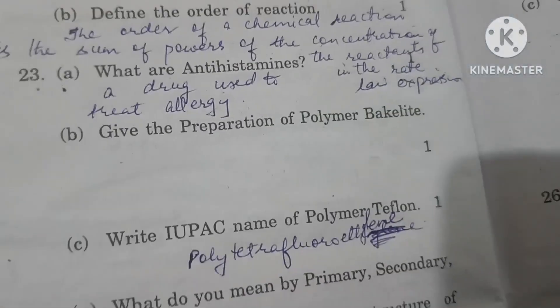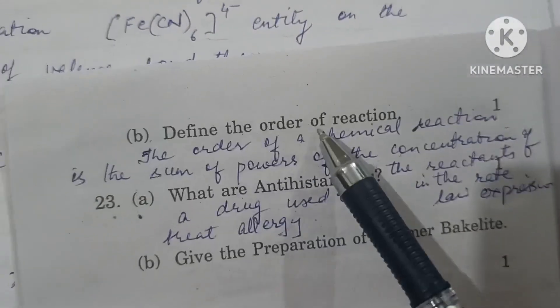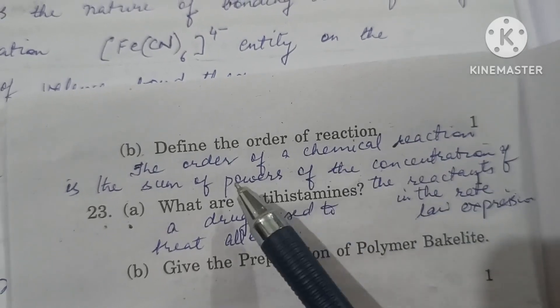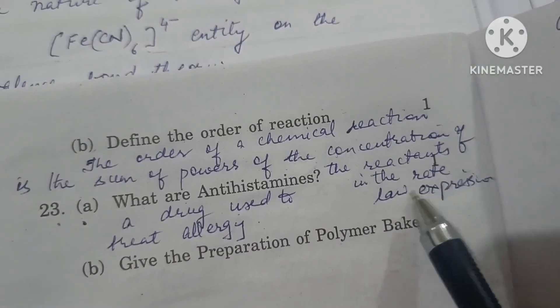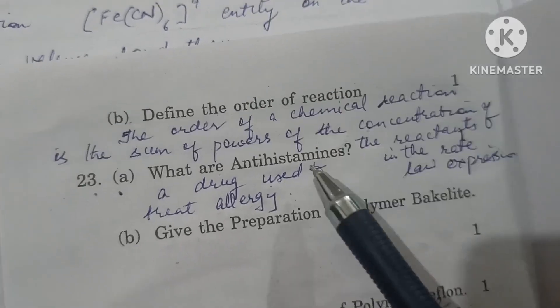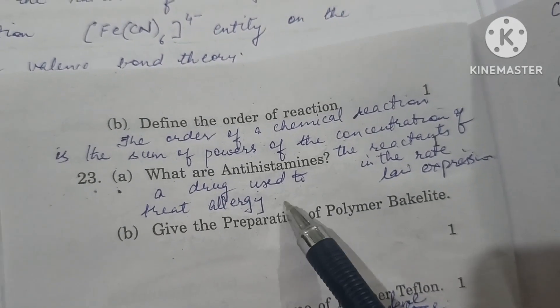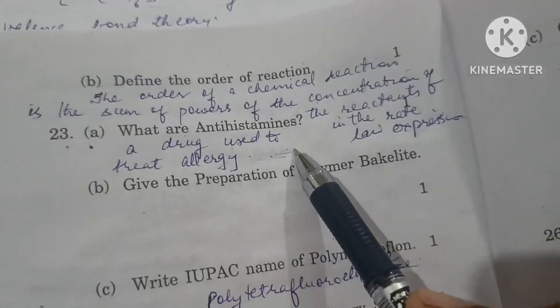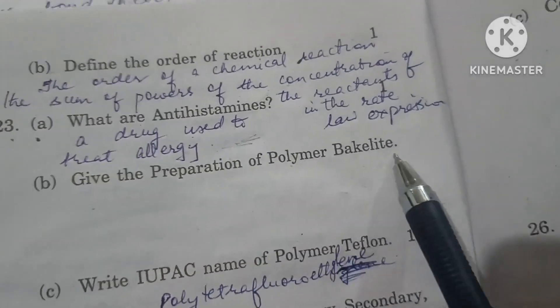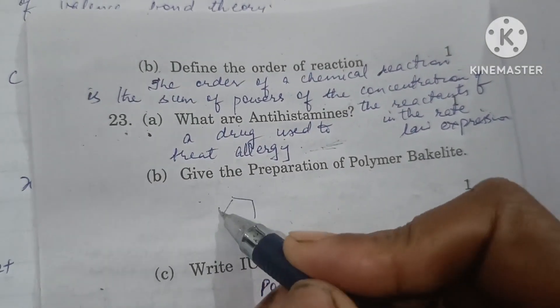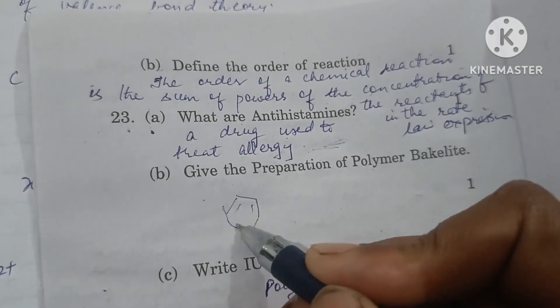Define order of reaction. Order of a chemical reaction is the sum of the powers of concentration of the reactants in the rate law expression. What are antihistamines? Drugs used to treat allergy are called antihistamines.